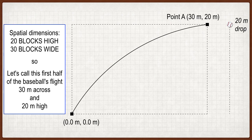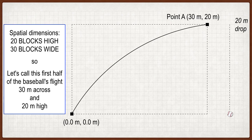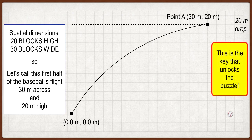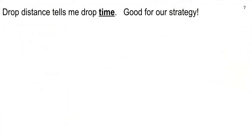I've got a straight 20-meter drop here. The baseball starts up and drops down 20 meters in a certain amount of time. That drop time — which we're going to figure out next — is the key that unlocks this entire objective of getting the equations of motion. If we can get the drop time, we can figure out everything else. We get the drop time from the drop distance.